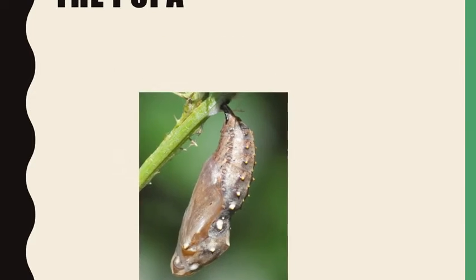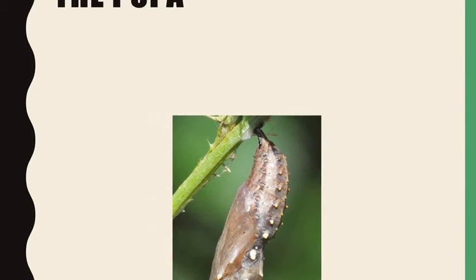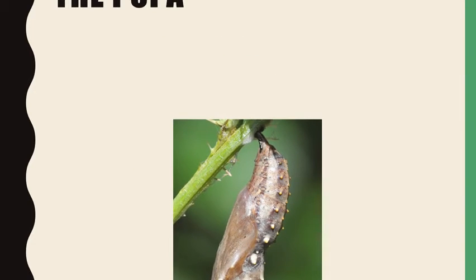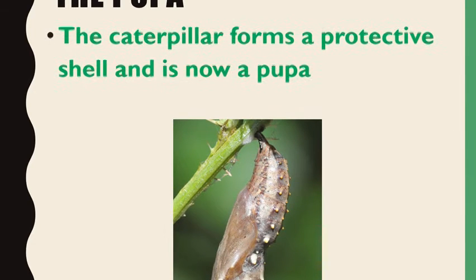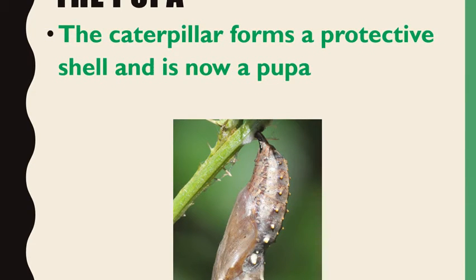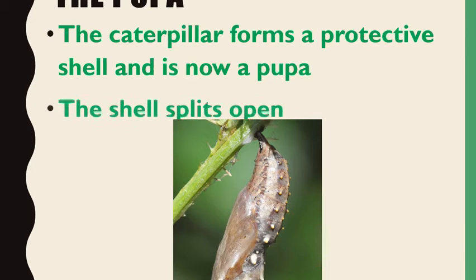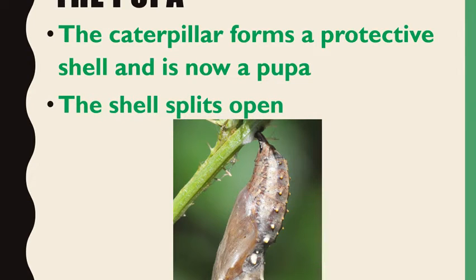The pupa or chrysalis. The caterpillar forms a protective shell and is now a pupa. The shell splits open.